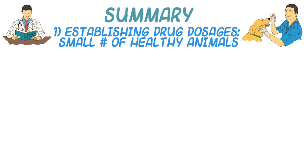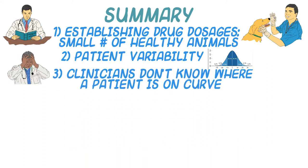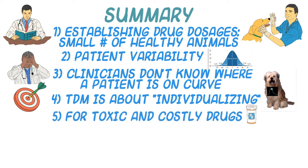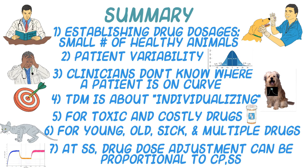In summary, drug dosages are originally established in a very small number of healthy animals by drug companies. The response to a drug varies between patients and is often described as an inverted bell-shaped curve, and a clinician doesn't know where a specific patient might lie on this curve. Therefore, therapeutic drug monitoring, or TDM, is about individualizing a drug dosage regimen for a patient. TDM is most commonly done for drugs that show significant toxicity or are costly, and may be indicated in the young, the old, the infirm, and when multiple drugs might be leading to drug-drug interactions. When TDM is performed at steady state, dosage adjustments can be proportionate to relative changes in the plasma concentration at steady state.